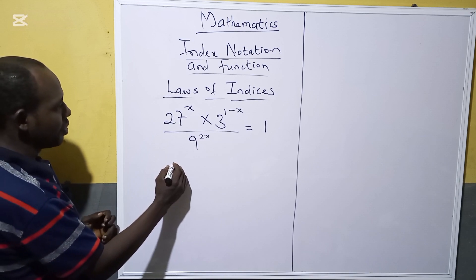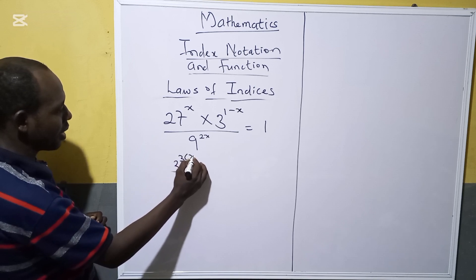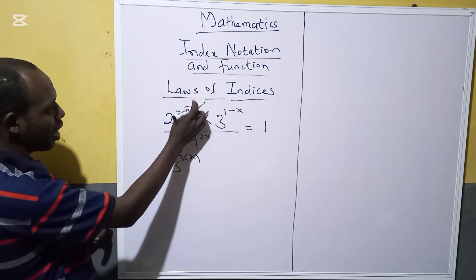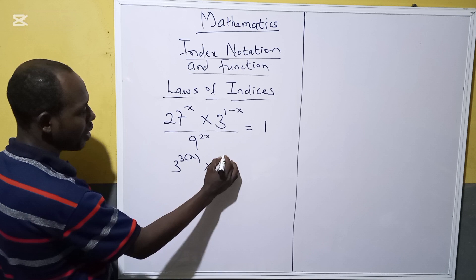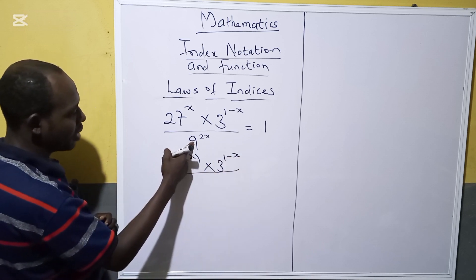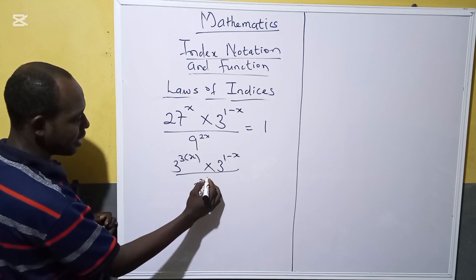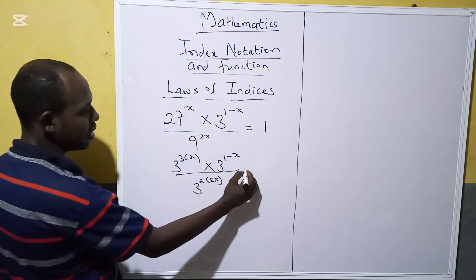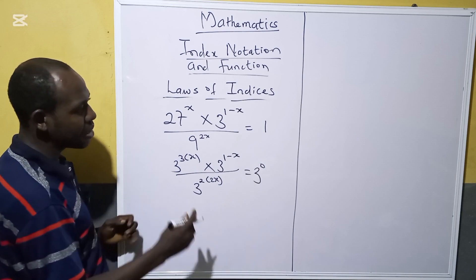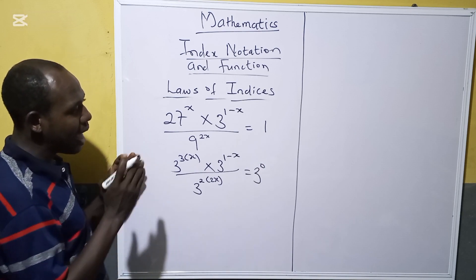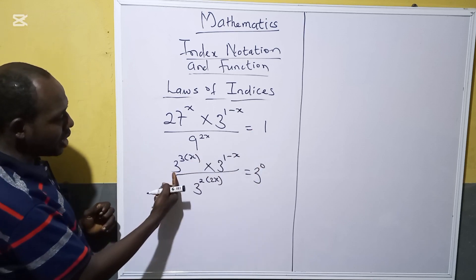Now you take 27 raised to the power x — it becomes 3 raised to the power 3, in brackets, x, because 3 raised to the power 3 is 27. Then multiply by 3 raised to the power 1 minus x. Our 9 can also be written as 3 squared, with the 2x remaining. Then our 1 can be changed to 3 raised to the power 0, because the zero law says any number raised to the power 0 is 1. Now I have made all my numbers to base 3.